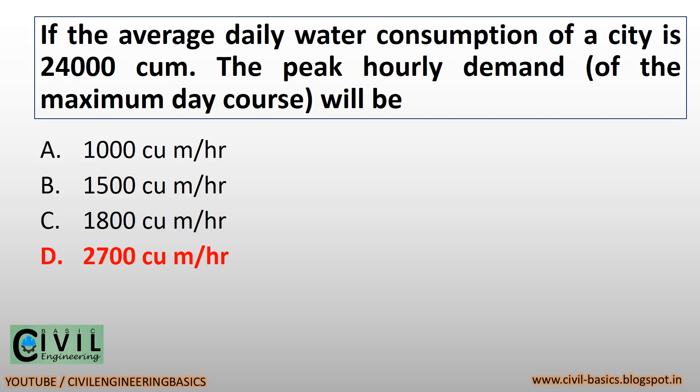If the average daily water consumption of a city is 24,000 cubic meters, the peak hourly demand of the maximum day will be 2,700 cubic meters per hour.